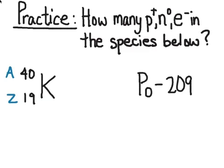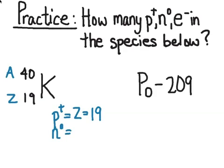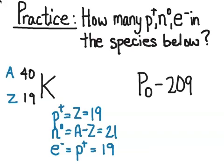Let's start with potassium-40. Remember: you write atomic symbols from A to Z, where A is the mass number and Z is the atomic number. So A is 40 — that's the number of protons plus neutrons — and Z is 19, the number of protons. The number of protons is 19. The number of neutrons is A minus Z, so 40 minus 19 equals 21. The number of electrons equals the number of protons — 19 — because there is no charge written to the right of the potassium symbol K.